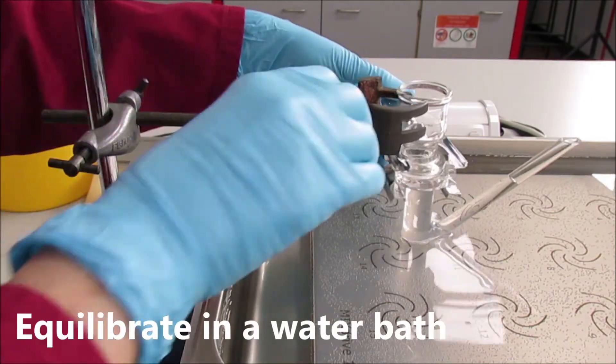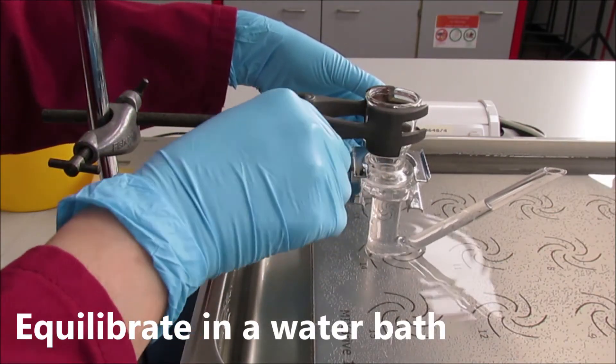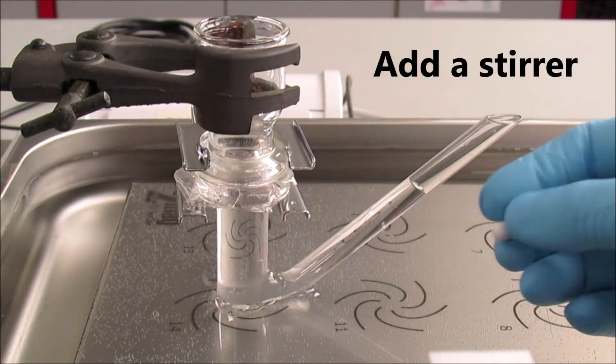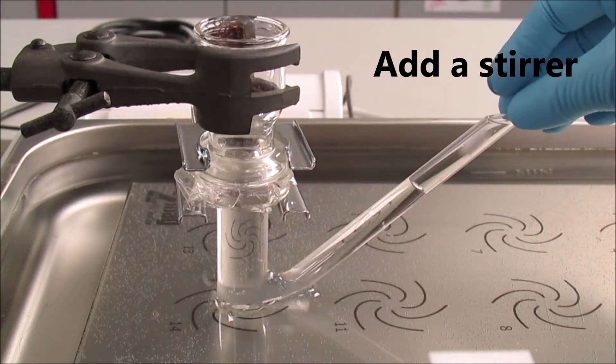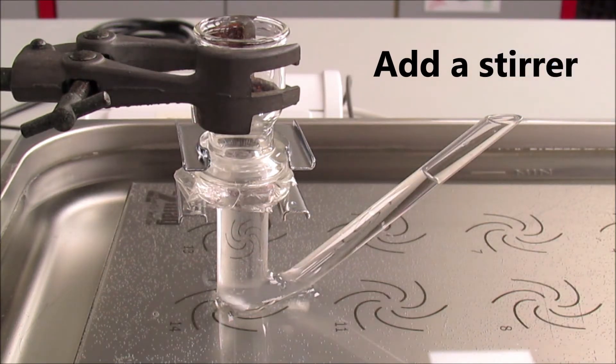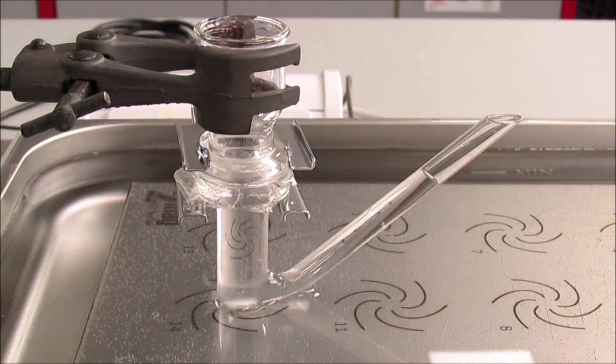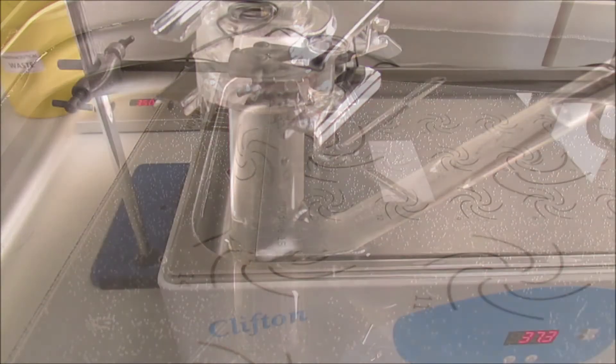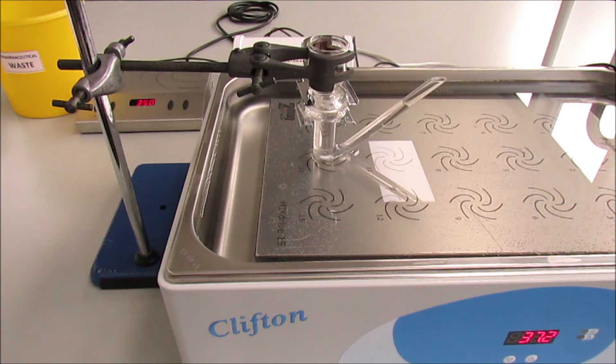That's how the FRANS cell is secured using a lab stand. That's how the magnetic bar is inserted into the receptor compartment. It should be stirring inside to ensure the perfect diffusivity of drug molecules.